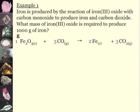I am given the amount of iron, a mass of 1000 grams, and I know the molar mass is 55.85 grams per mole, and that's simply by looking at my periodic table.